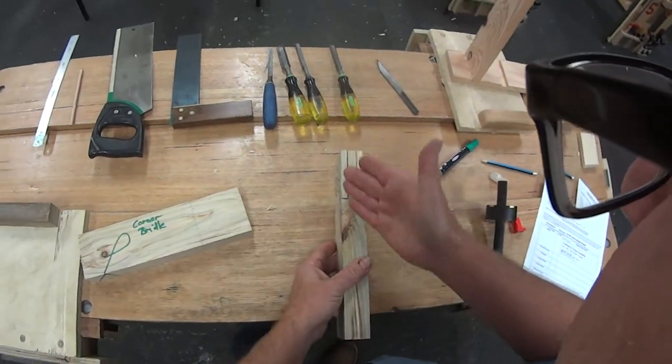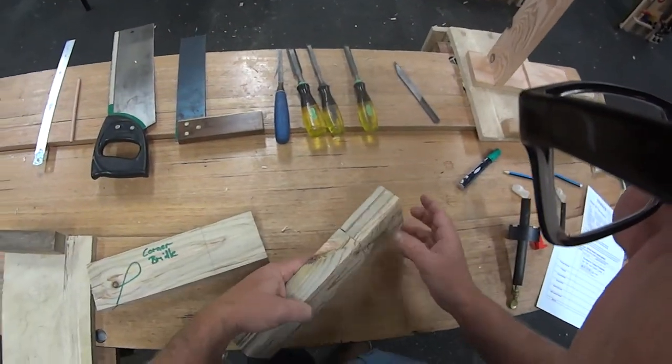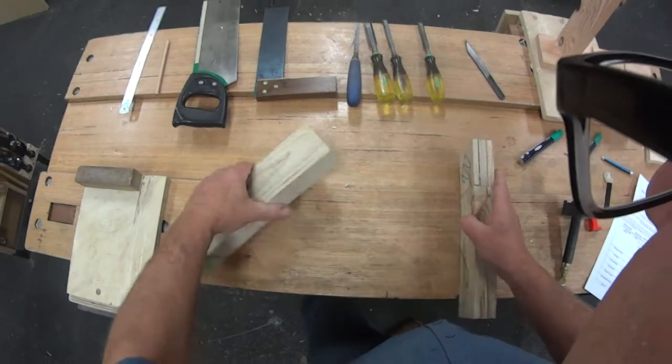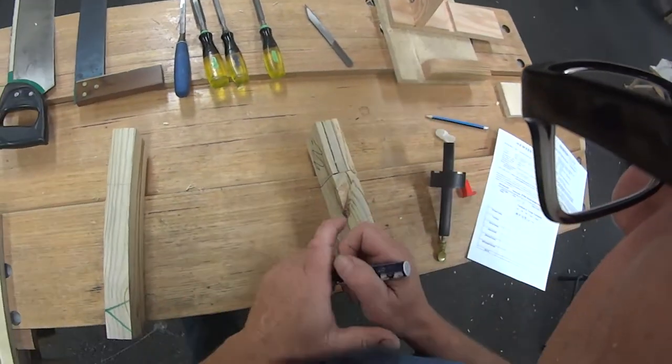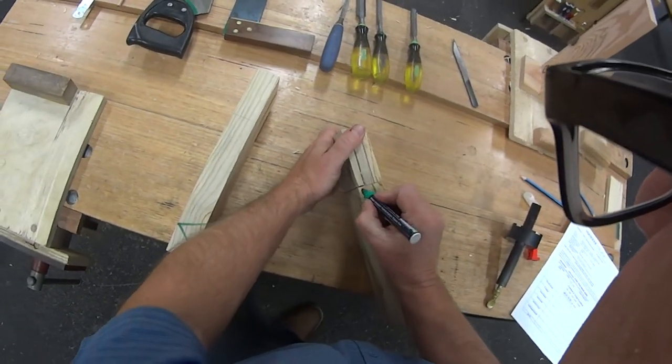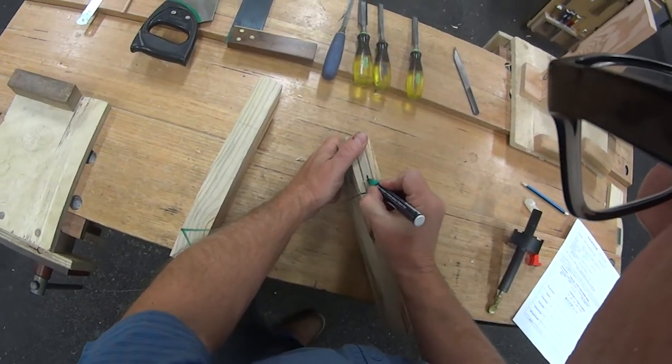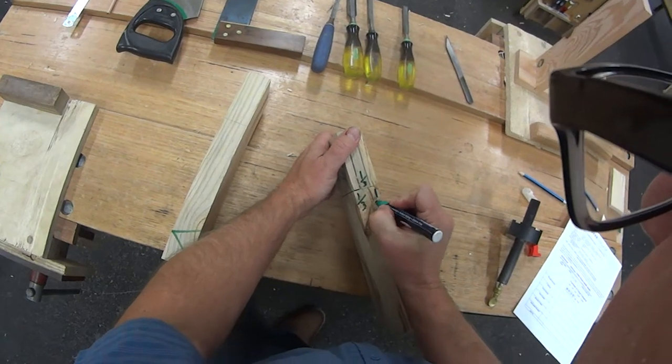So I've already cut down this side, but to mark it out I'll show you the marking technique on this guy over here. We need to divide it into three. That's the important thing with this joint: it's thirds. One third, one third, and one third.